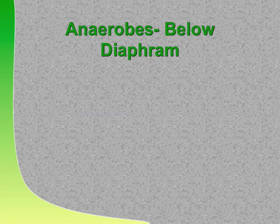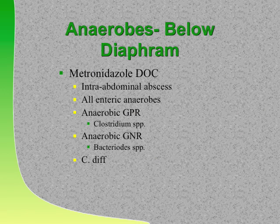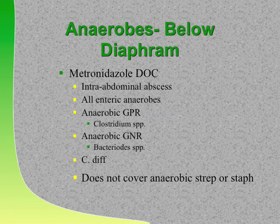What are the anaerobes in your stool that you need to cover with metronidazole? One gram-negative rod anaerobe and one gram-positive rod. Clostridium (which makes gas gangrene) and Bacteroides fragilis. Flagyl is the drug of choice. Don't forget C. diff is covered with Flagyl. Clindamycin does not cover C. diff and may actually cause it. Remember: Flagyl does not cover anaerobic strep or staph, mostly found above the diaphragm, whereas below the diaphragm you want Bacteroides and Clostridial coverage.